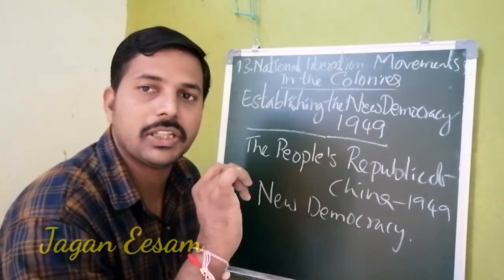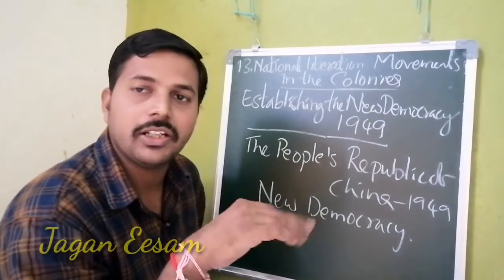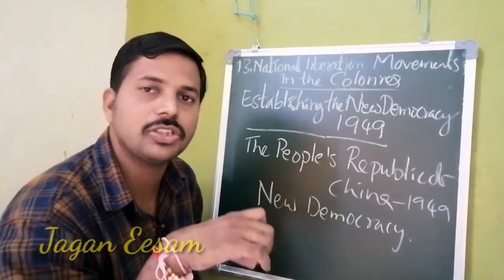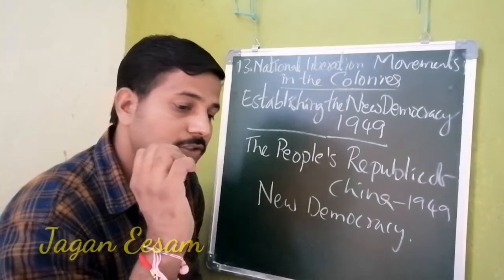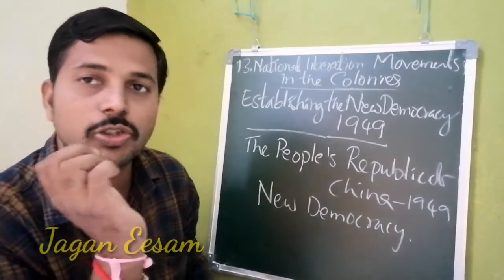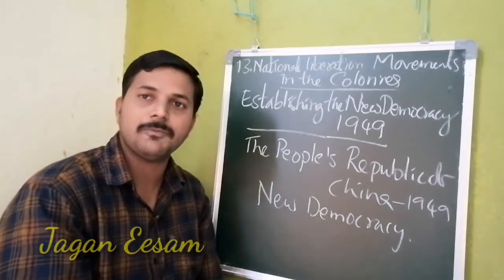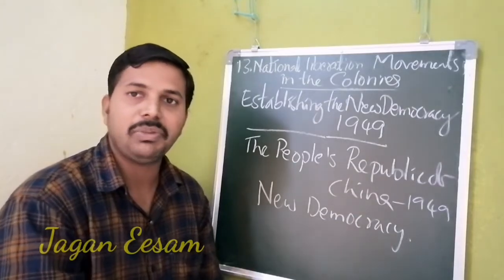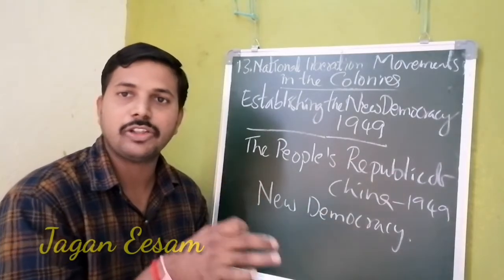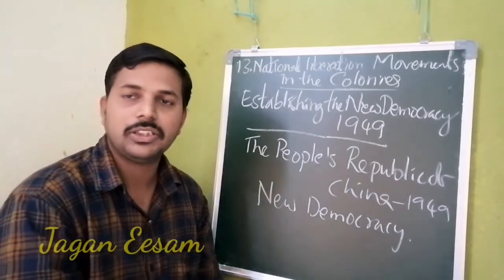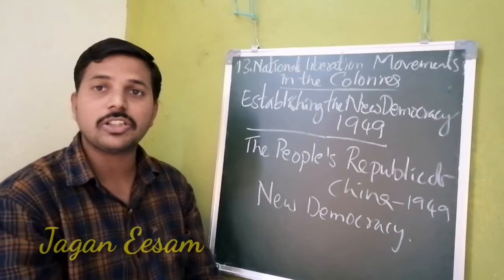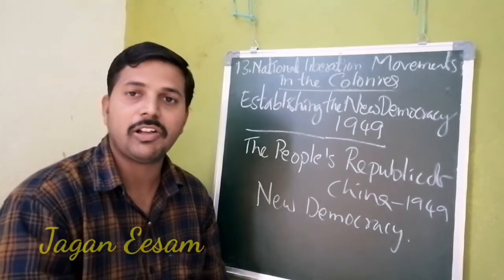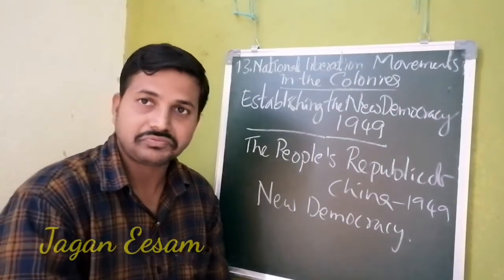This new government was based upon the principle of new democracy. New democracy was a principle involving the association and inclusion of all social classes. This new government planned to include all kinds of people in the government process. Simply put, this government established a socialist government, giving priority to all people.